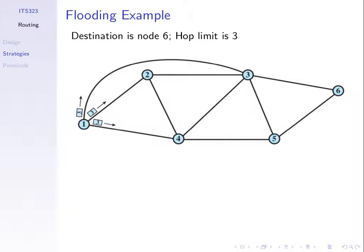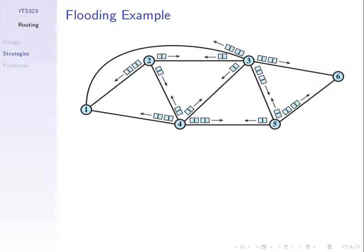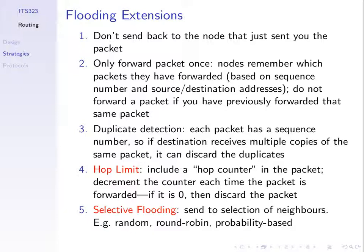Those two rules — only forward once and don't retransmit duplicates — were not used in the original example. Without sequence numbers, when node two receives packets from three and four, it sends copies to its neighbours. But with sequence numbers, when two receives the packet from three, it realises it has already sent it to its neighbours and there's no need to do it again. The goal is to send one copy of the packet to your neighbours. That cuts down on the number of transmissions.